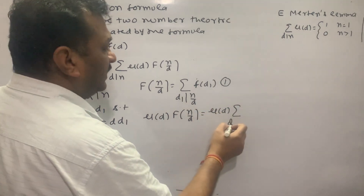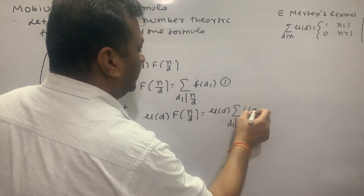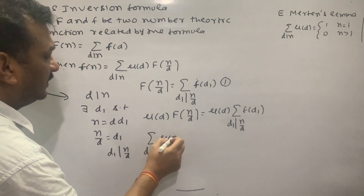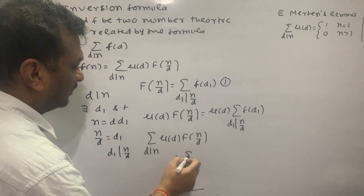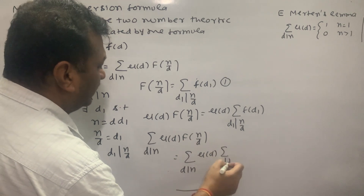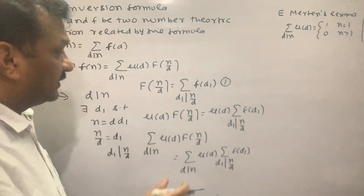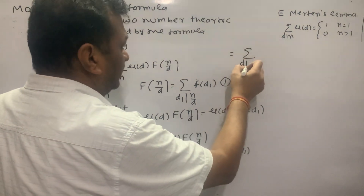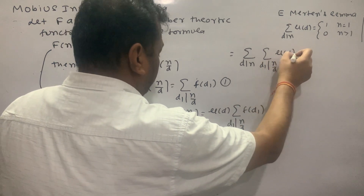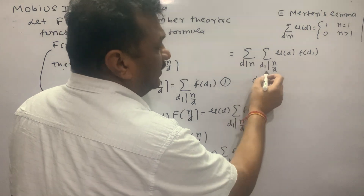We write summation over d dividing n of μ(d) times summation over d₁ dividing n/d of f(d₁). Rearranging, this becomes summation over d dividing n and d₁ dividing n/d of μ(d) times f(d₁), which we can also write as summation over d₁ dividing n/d minus d.